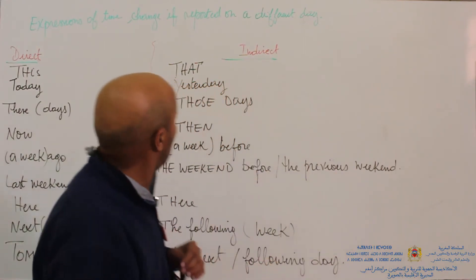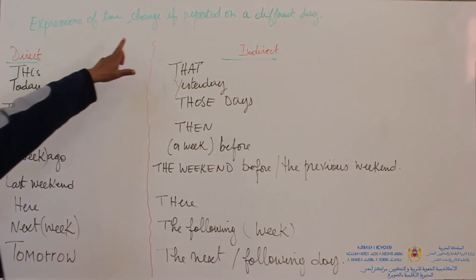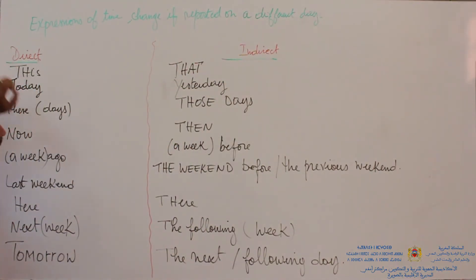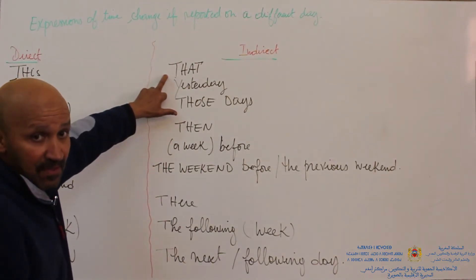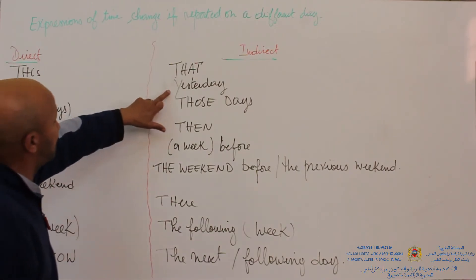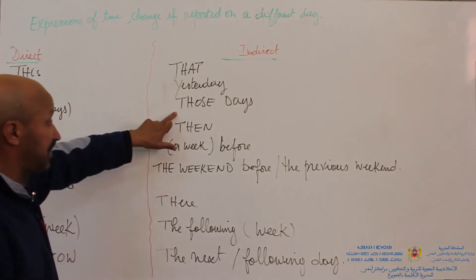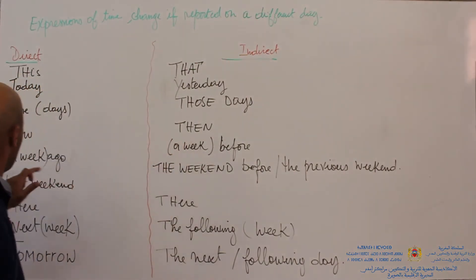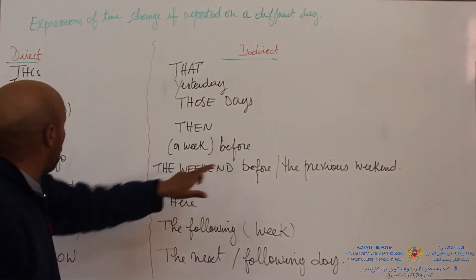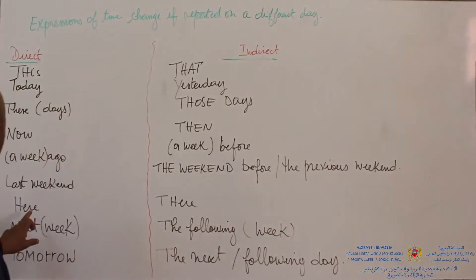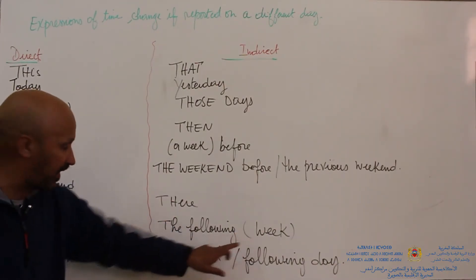Expressions of time also change if reported on a different day. In direct speech to indirect speech: 'this' becomes 'that', 'today' becomes 'yesterday', 'these days' becomes 'those days', 'now' becomes 'then', 'a week ago' becomes 'a week before', 'last weekend' becomes 'the weekend before' or 'the previous weekend', 'here' becomes 'there', 'next week' becomes 'the following week', and 'tomorrow' becomes 'the next day' or 'the following day'.